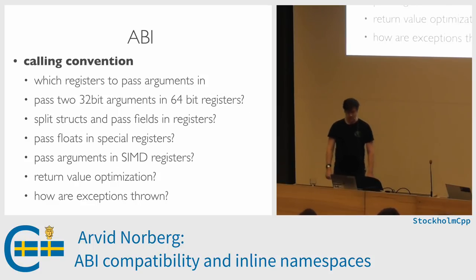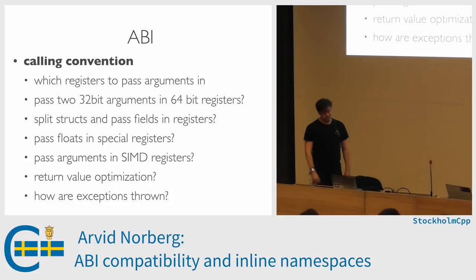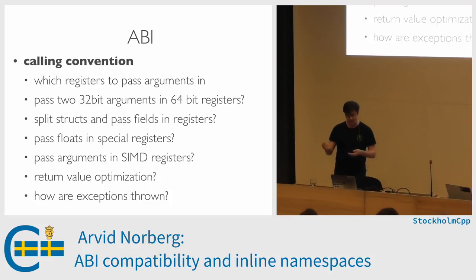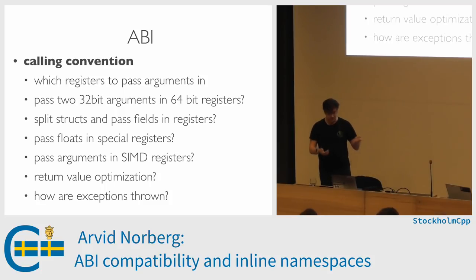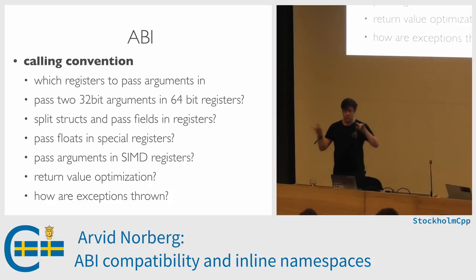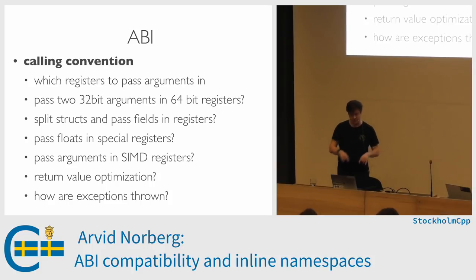What constitutes an ABI? Here are some examples. Calling conventions: when you call a function, what actually happens on your CPU? Are arguments passed in registers? Which registers? Where are the return values stored? Which register? Are they all stored on the stack? Some compilers pass two 32-bit arguments into a single 64-bit register, which is pretty clever.